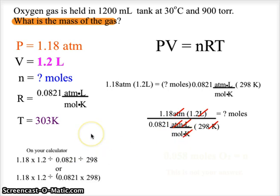We can calculate it by 1.18 times 1.2 divided by 0.0821 divided by 303. Or we could divide by the value of 0.0821 times 303. Make sure you plug that into your calculator correctly.